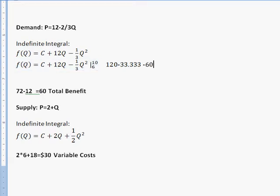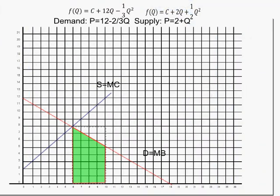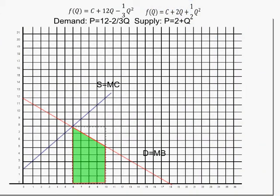So 120 minus 33.333333 minus 60 gives you 26.67, depending on how many places you want to round it off to. So that tells us that the area of this green portion is $26.67. That's the most this person would be willing to pay for units 7, 8, 9, and 10, assuming they already had 6 units. Pretty cool, huh?